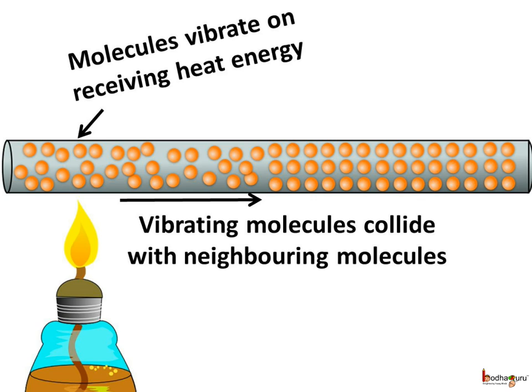How exactly does heat travel through metal? We know that in solids, molecules are tightly packed. Molecules can't move around freely, but they can vibrate. The molecules at the end of the rod receiving heat from the flame start vibrating faster with more displacement because of the received heat energy.